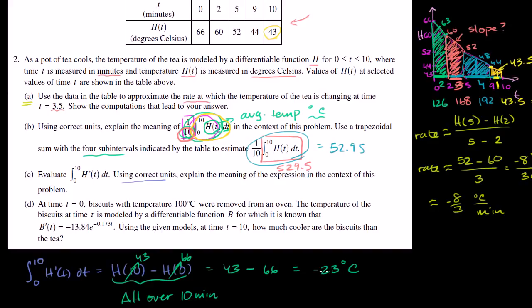This gives us negative 23 degrees Celsius. So our change in temperature is negative 23 degrees — our temperature has gone down 23 degrees Celsius over the course of the first 10 minutes. That is part C.